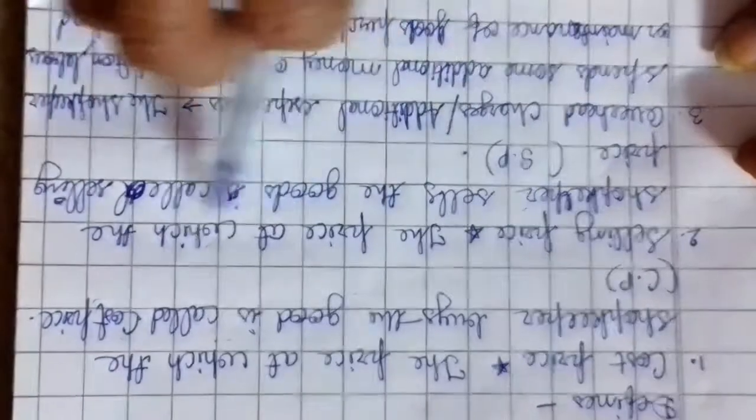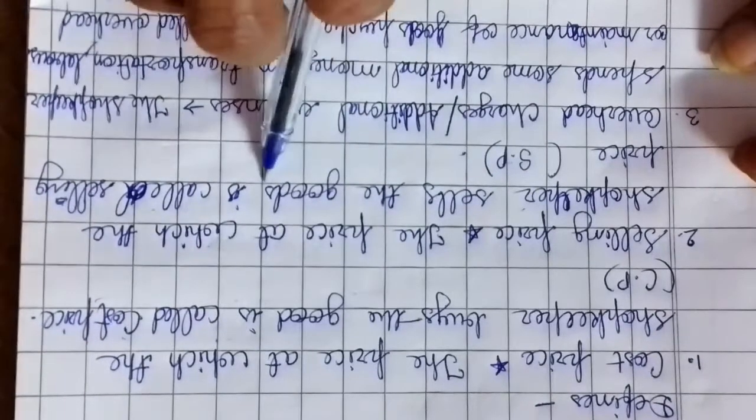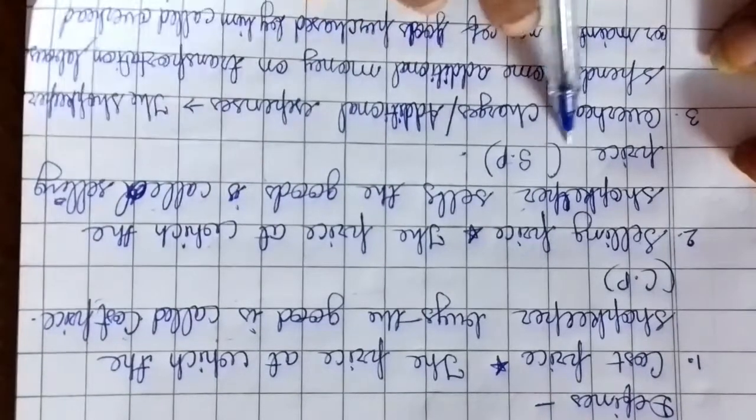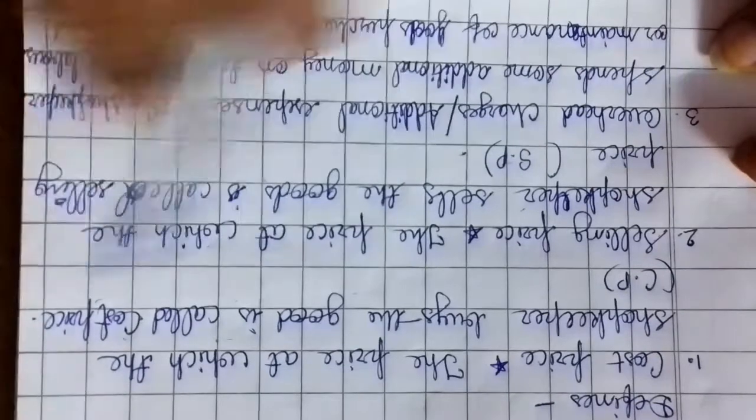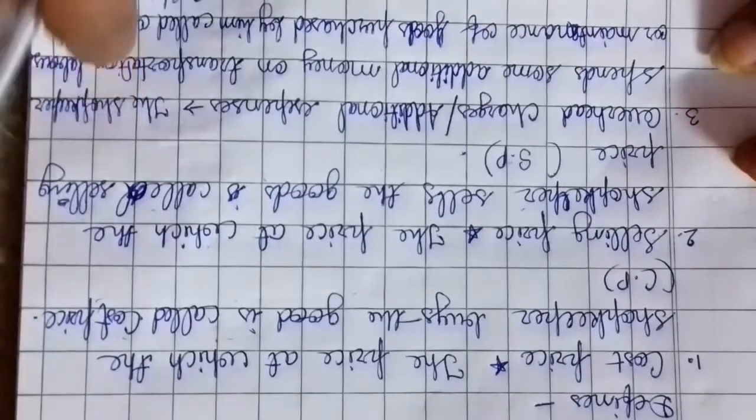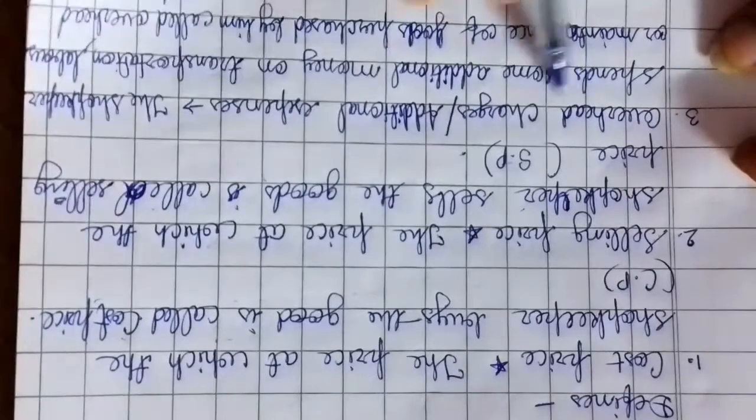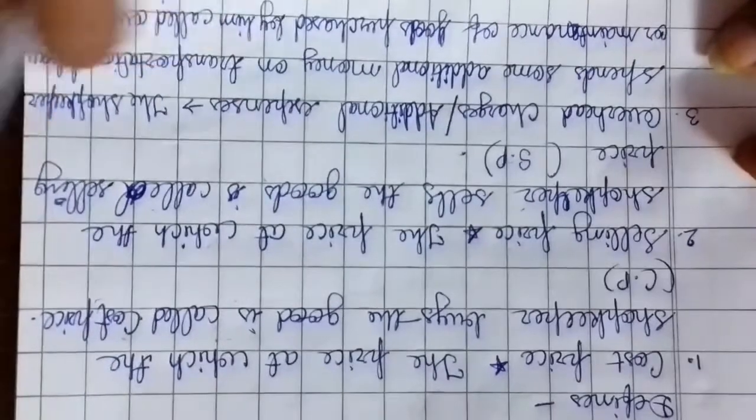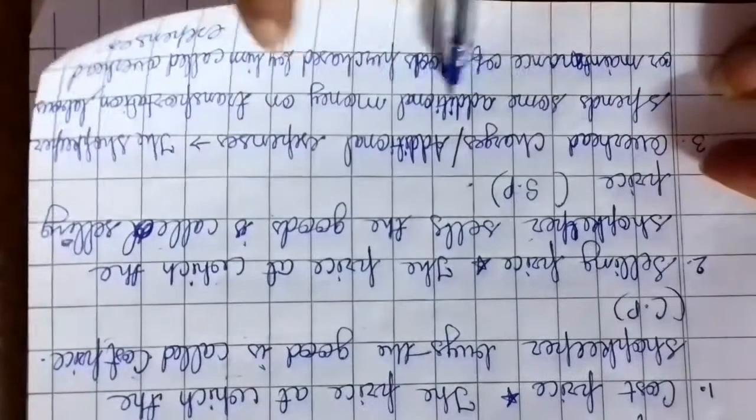Selling Price: The price at which the shopkeeper sells the goods is called Selling Price. The price at which shopkeeper sells his goods is called Selling Price. Overhead charges and additional expenses - the shopkeeper spends some...